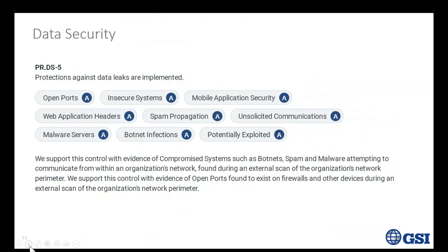This next view looks at protections against data leaks. We're looking again at open ports and web application headers, but also: is there evidence of an infection within your system? Are you having spam sent out from your internet-facing servers? Are you potentially exploited with unsolicited communications? Are you showing evidence of malware or botnet infections based on certain types of traffic? This particular service looks at a lot of the dark web and known malware servers to see where traffic is going.